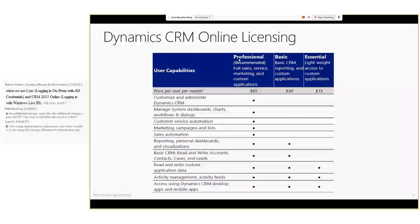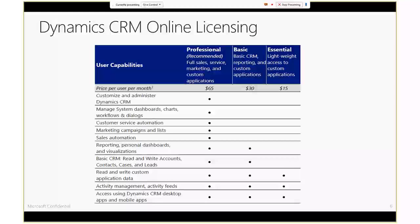There are three license types. Professional is the most common — full read/write/create/delete access to everything: sales, service, and marketing. Basic is cheaper — meant for users who mainly need read access; they can create accounts, contacts, tasks, notes, and leads, but everything else is read-only. Essential is the cheapest — designed for portal scenarios, such as surfacing CRM data in a SharePoint web part; users can access CRM data through a portal without logging into CRM directly.